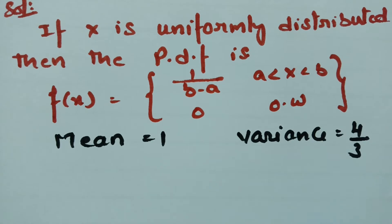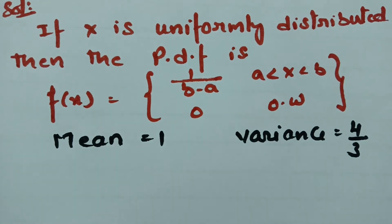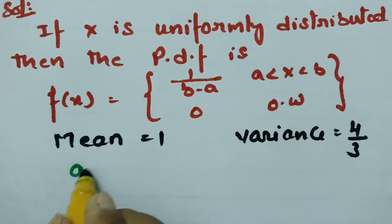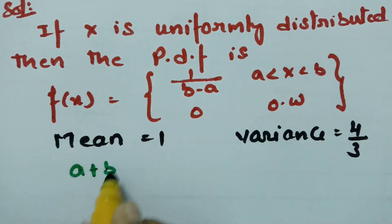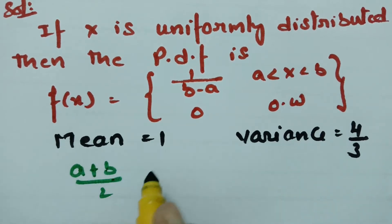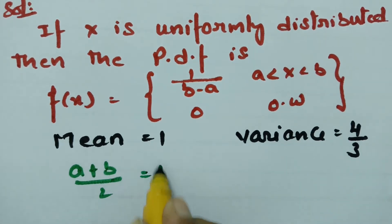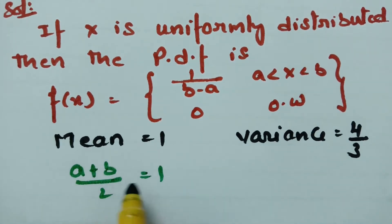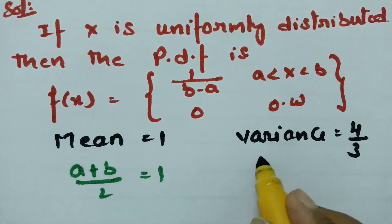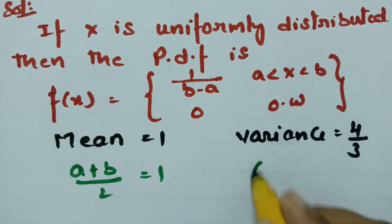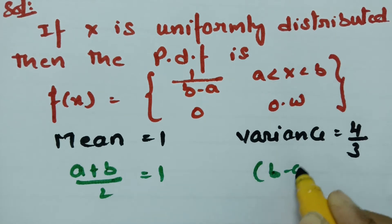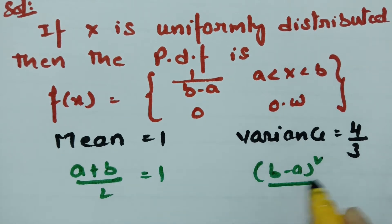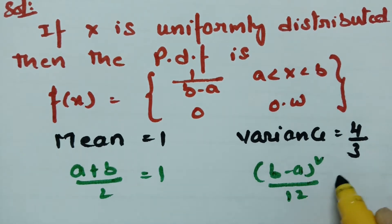As mentioned earlier, I made a video on mean and variance — please have a look at that. The mean formula is (a + b) / 2, and the variance formula is (b - a)² / 12.